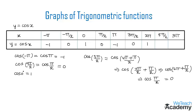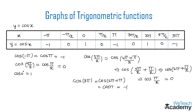For x equal to 3 pi: cos(3 pi) can be written as cos(2 pi plus pi), which is in the form cos(360 plus theta), giving cos(pi). The value of cos(180 degrees) is minus 1, so y equals minus 1.